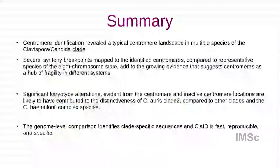It was validated and working fine. Summarizing the work: centromeres could be the focus of research if we are to look at other strains that are coming up. Clade two is something we could focus on, given that it undergoes many rapid chromosomal rearrangements. These are the papers that correspond to the work I just presented. Thank you.